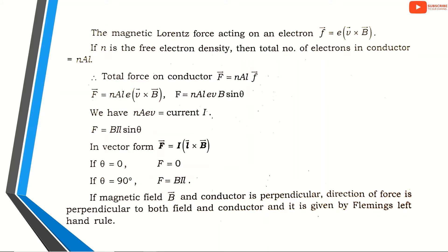The total force on the conductor is F equal to N A L times e into V cross B. Simplifying, the total force F equals BIL. This is the force on a current-carrying conductor in a magnetic field.